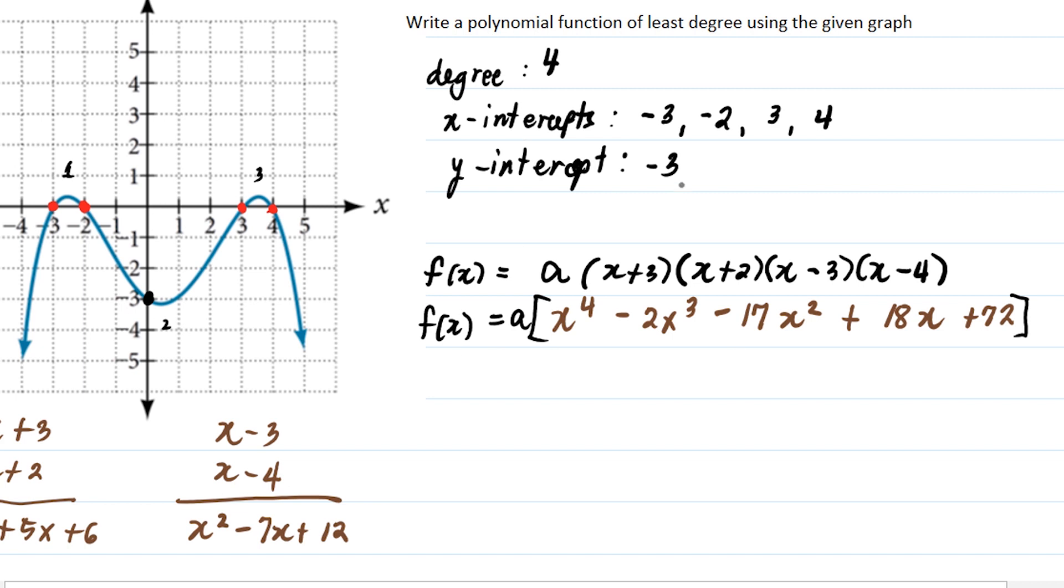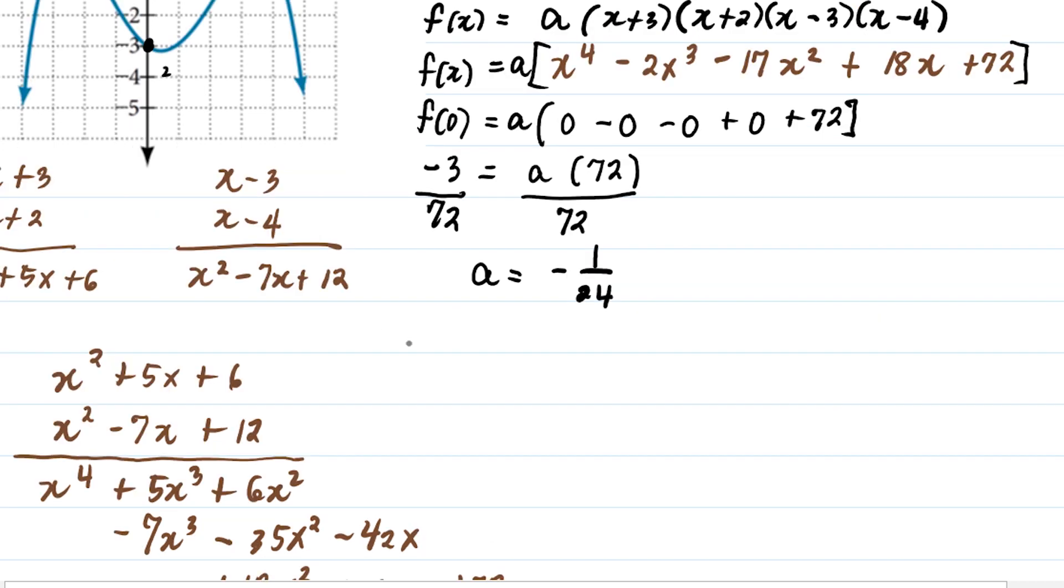Let's compute for the y-intercept. That means we're going to evaluate f at 0. That will give us a times 72. f of 0, according to the y-intercept, is negative 3, equals a times positive 72. All you have to do to compute for the value of 'a' is divide everything by 72. Therefore, a is equal to negative 1 over 24.